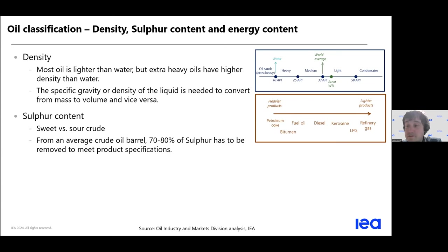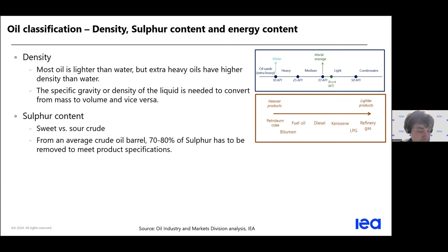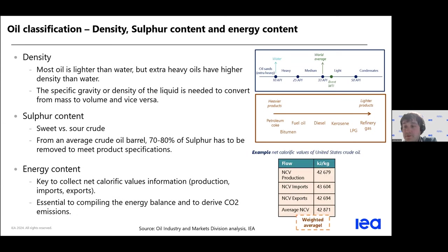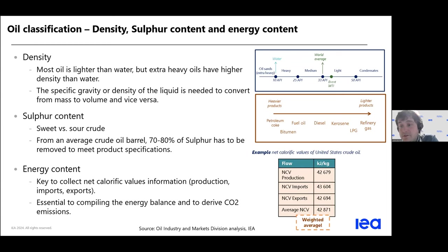The second physical parameter is sulfur content. For sanitary and energy efficiency reasons, most of the sulfur content of crude oil has to be removed to meet different specifications depending on the product. The third physical parameter is energy content — the calorific value — which allows us to convert between mass and energy. When doing energy balances, it is essential to know calorific values. For oil, it's mostly around 40,000 kilojoules per kilogram, but it depends from product to product, and from country to country. For some products it's fixed by specifications.